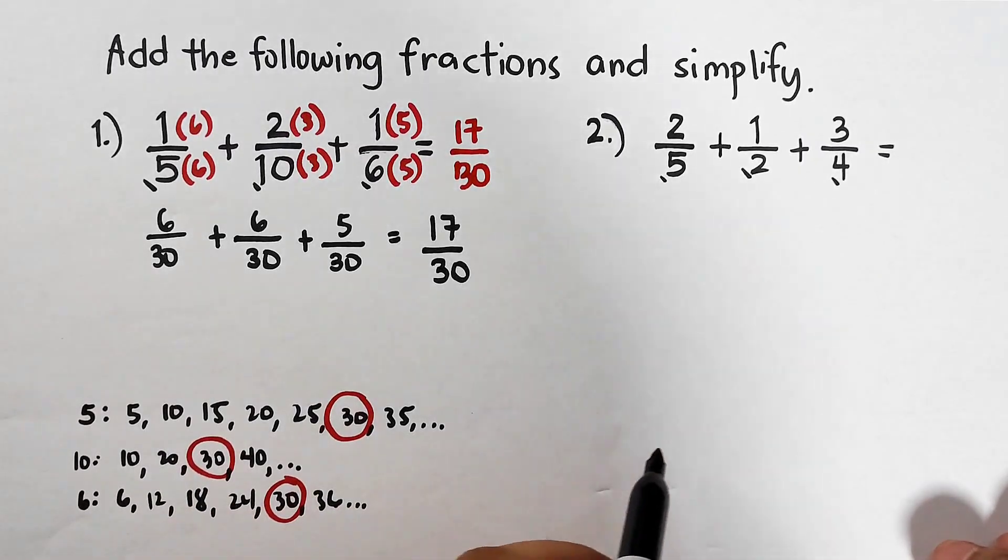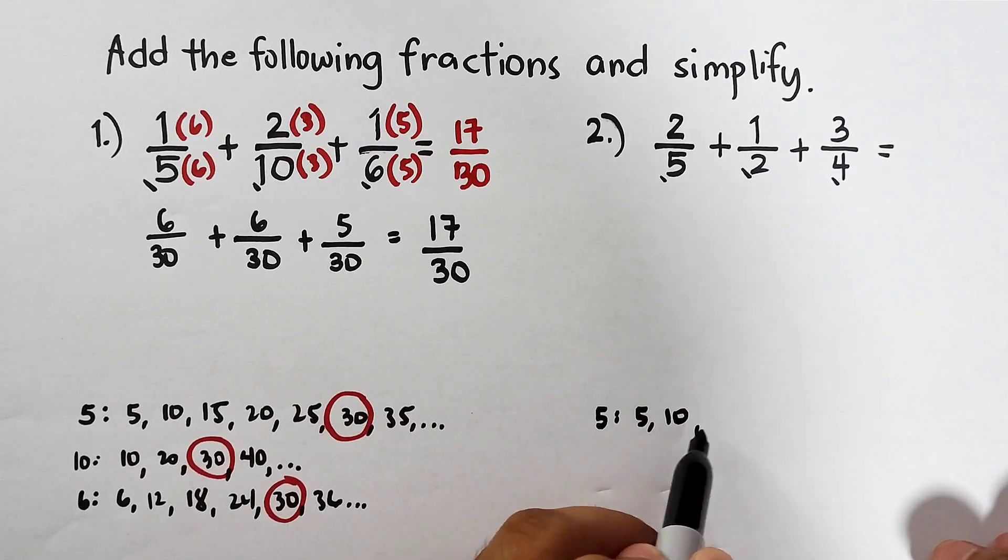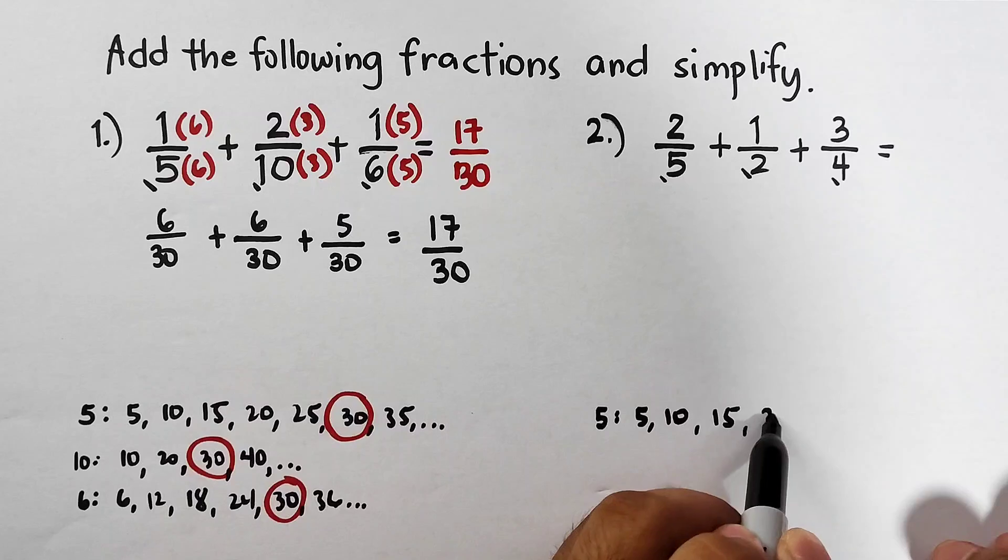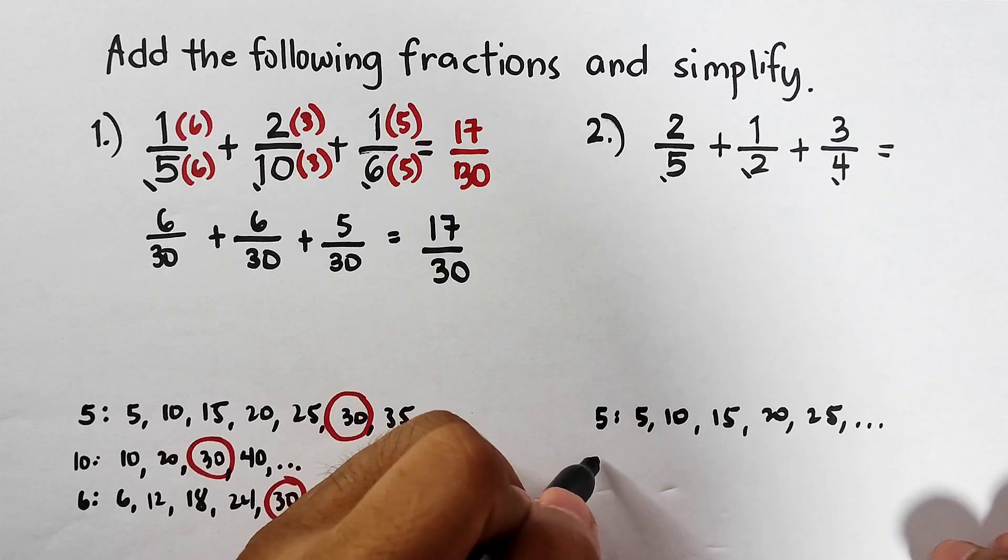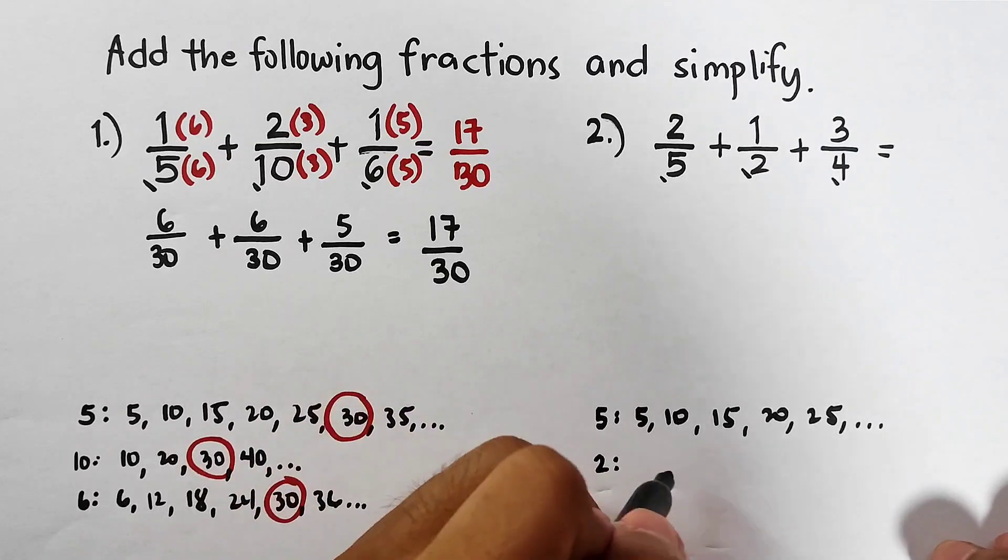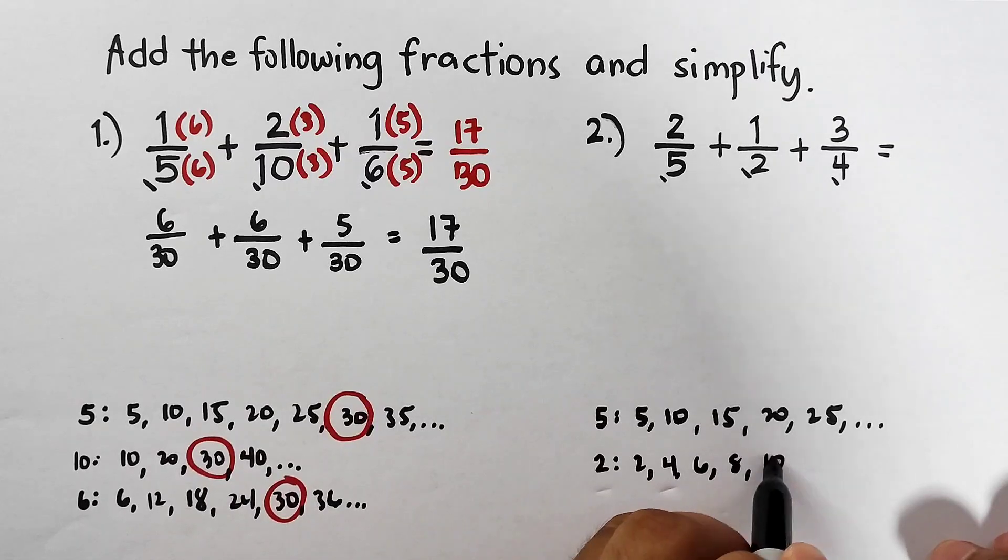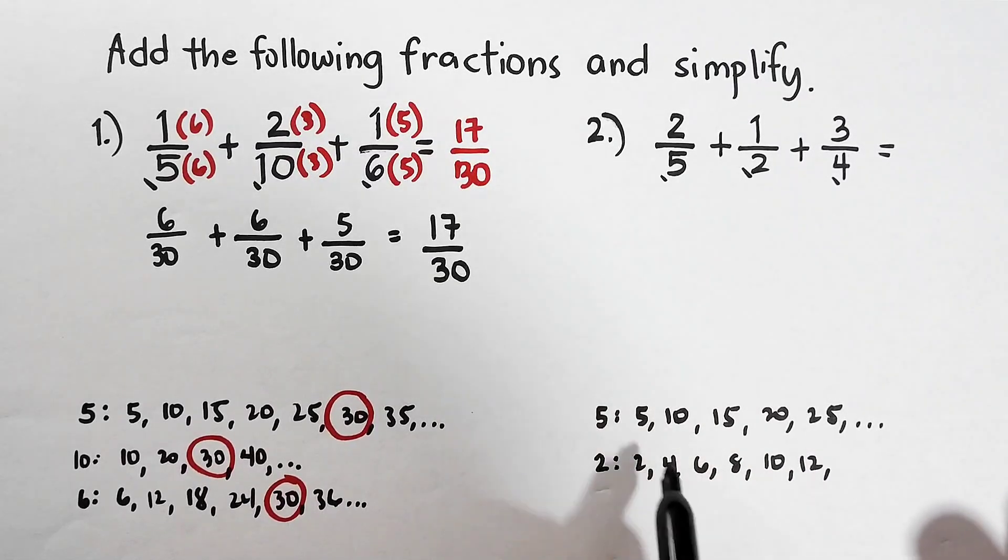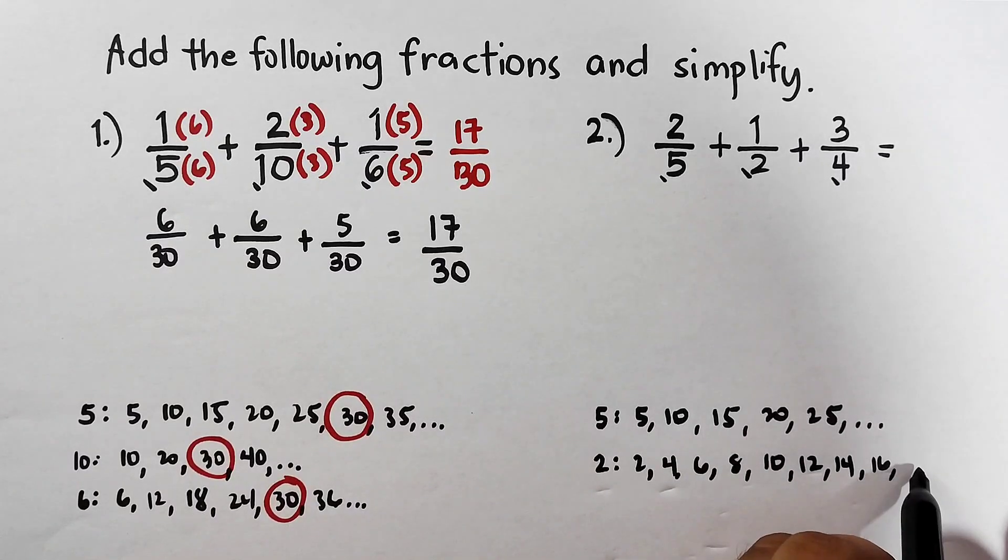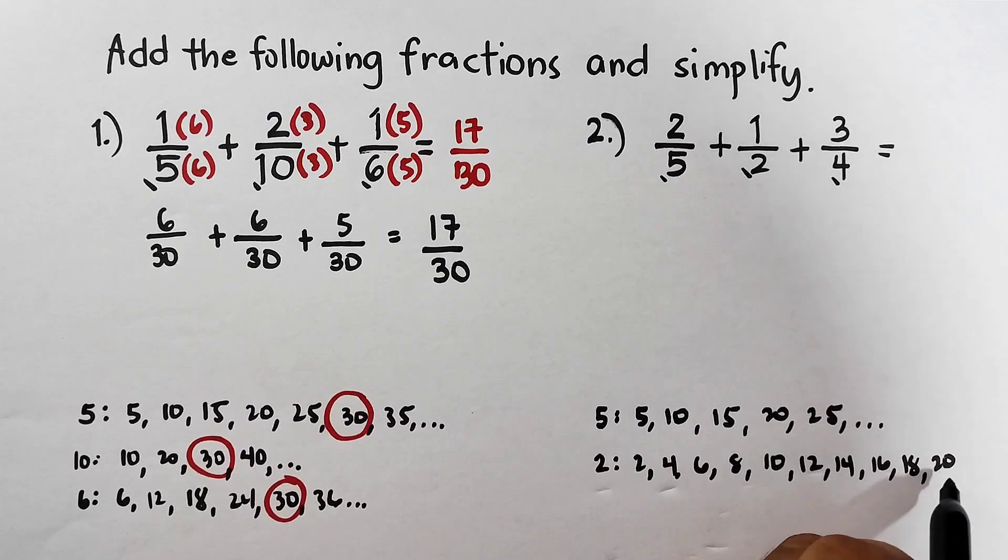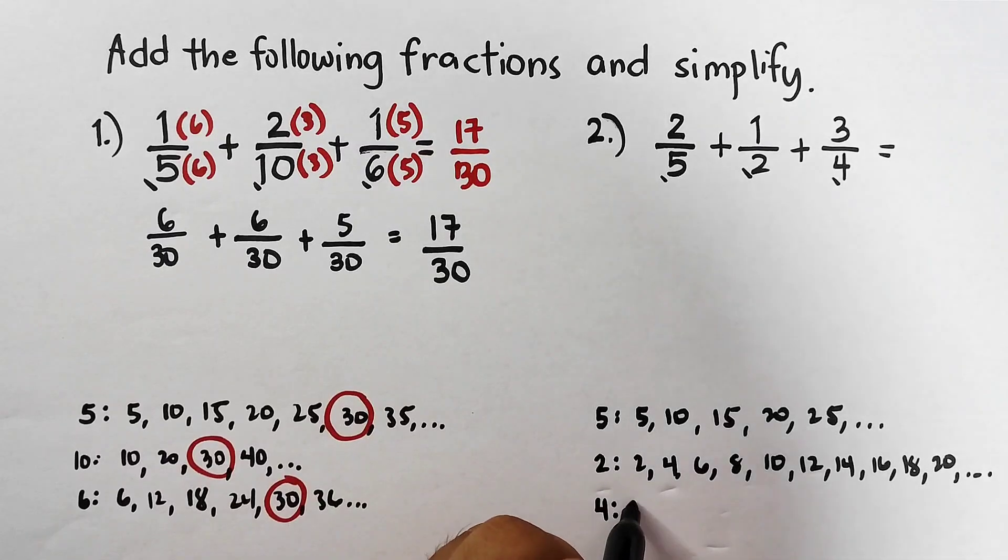For number 2, we are given the denominators 5, 2, and 4. We will list down their multiples to find the LCD. For 5 we have 5, 10, 15, 20, 25, and so on. Next is 2: